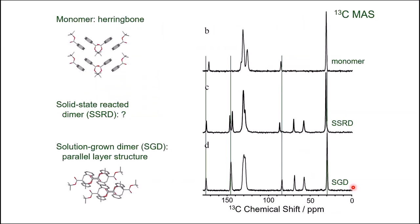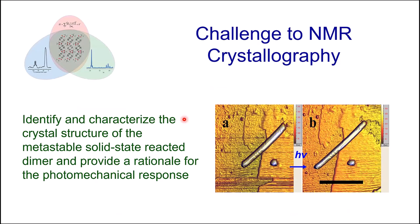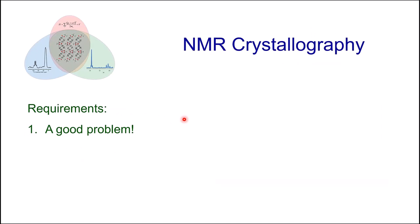The structure of the solid state reacted dimer — the species that expands — is different from the solution-grown dimer and the monomer, and I know this because it has a unique carbon-13 NMR spectrum. The challenge for NMR crystallography is to identify and characterize the crystal structure of this solid state reacted dimer and hopefully provide a rationale for the photomechanical response. This is the first requirement for NMR crystallography: you have to have a good problem that you can't solve with other methods.